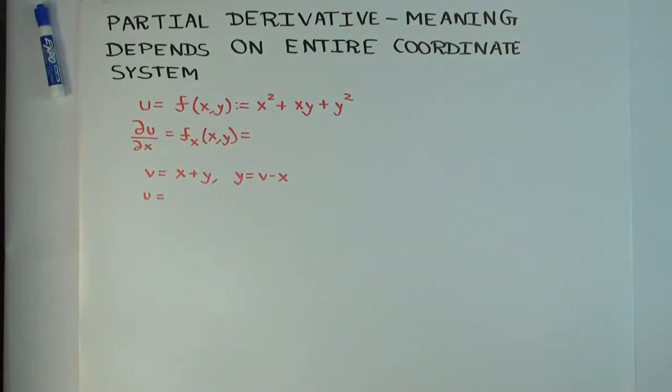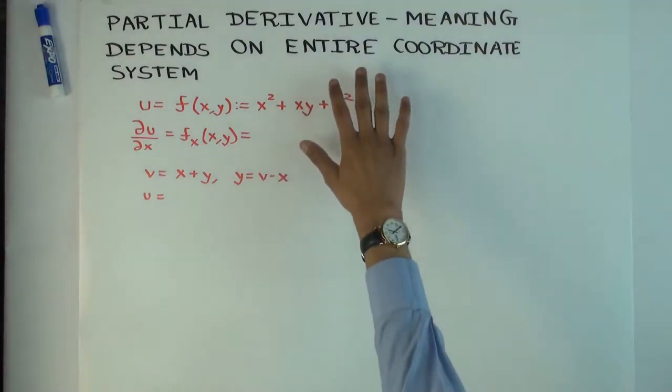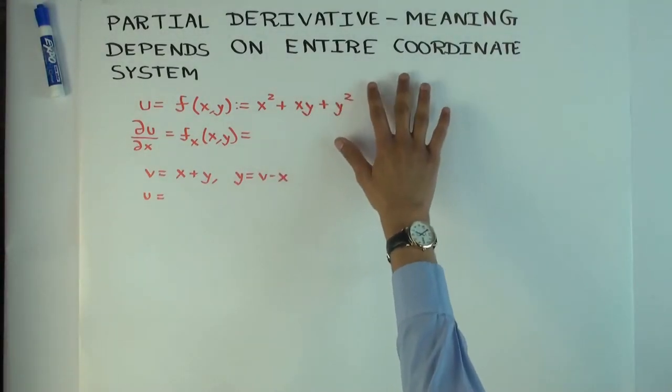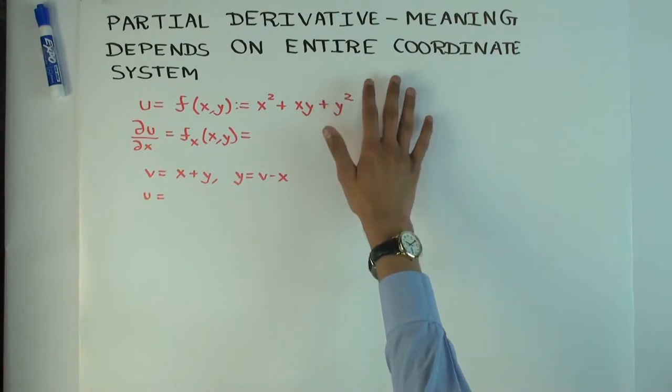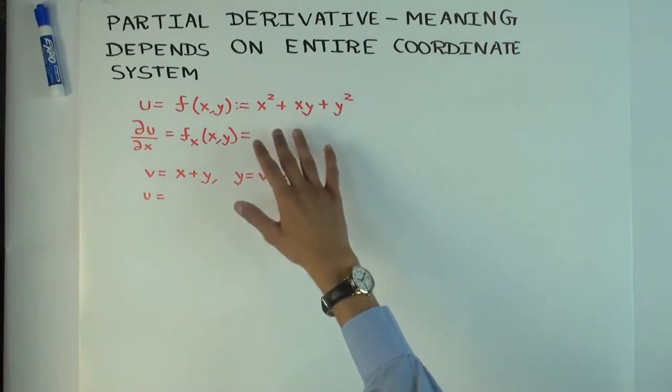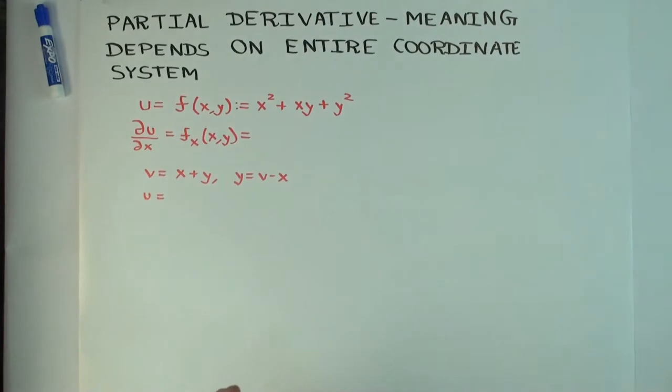So in this talk, I'm going to take a slightly more complicated example of the principle that the meaning of the partial derivative depends on the entire coordinate system. There's actually a previous video where I did a simpler example, which you should look at first, but this is a little complicated.